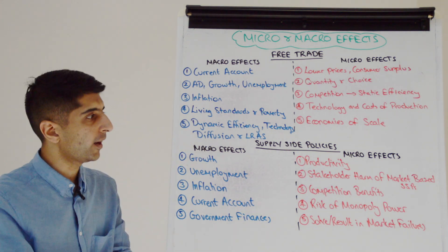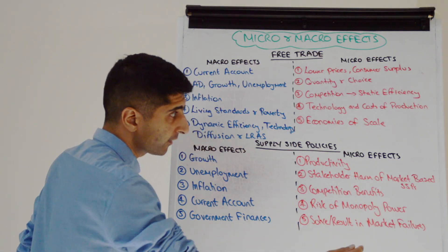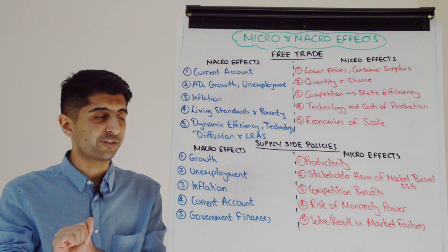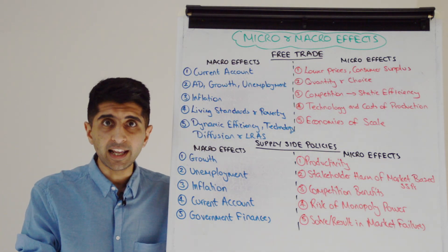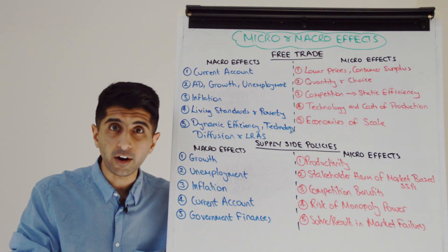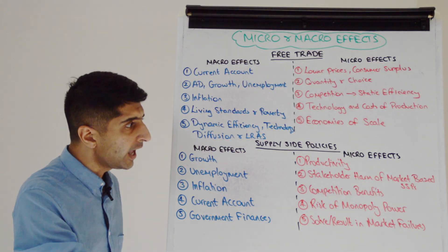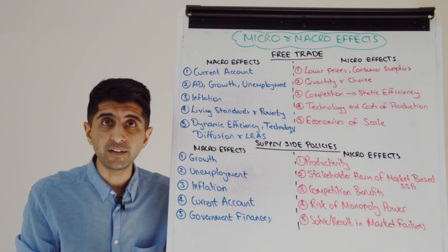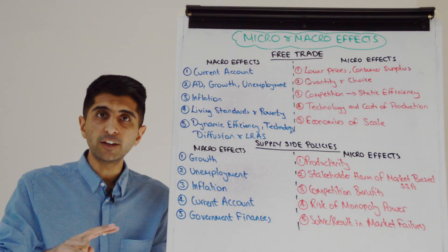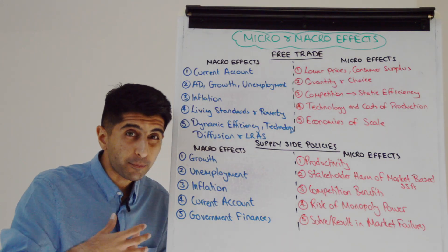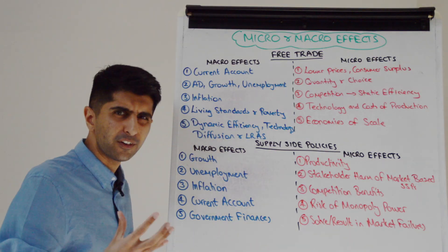If we dig into individual supply side policies, a lot of supply side policies can boost productivity. Certain supply side policies, especially the market-based supply side policies like deregulation, or some of your labor reforms as supply side policies, can harm stakeholders. Deregulation — where are the laws being cut or relaxed? Is it with environmental standards? Is it with health and safety standards? Is it with product safety standards? That can harm some key stakeholders. If we're talking about labor market reforms like reduction in benefits, like abolishing minimum wages, like lowering the strength of unions, that can harm workers. Competition benefits of privatization and of deregulation — we can talk about risk of monopoly power if those competition policies fail. We can get concentrated markets and problems with those. Definitely a micro effect.